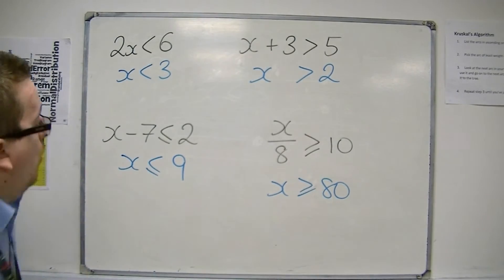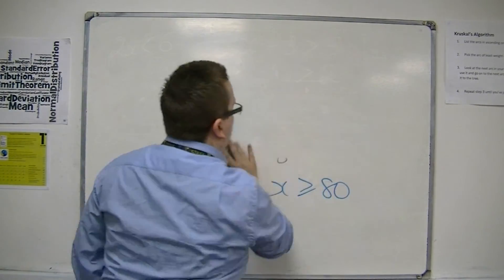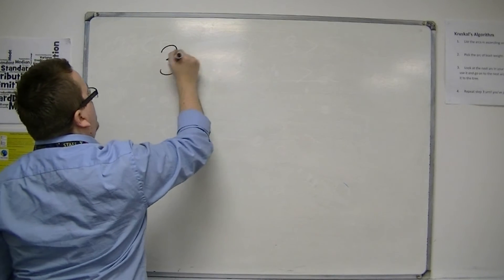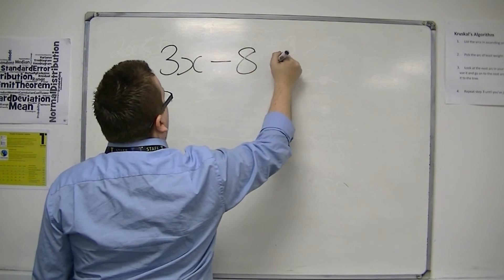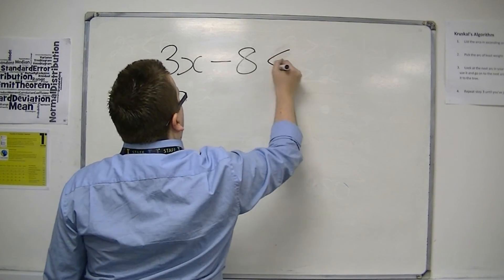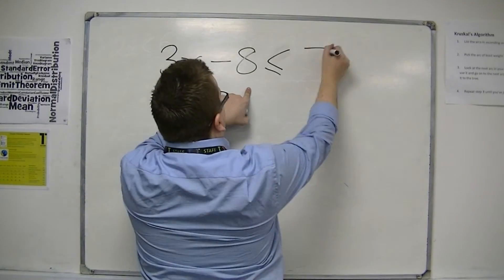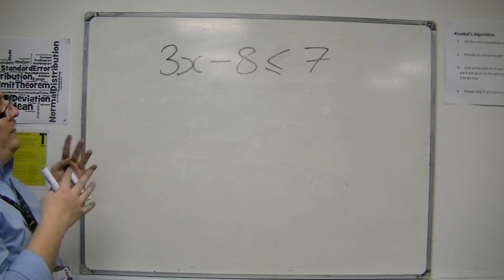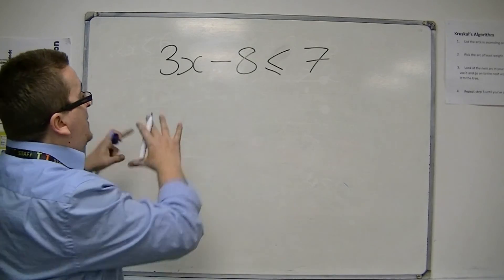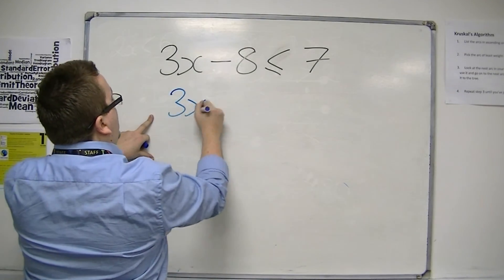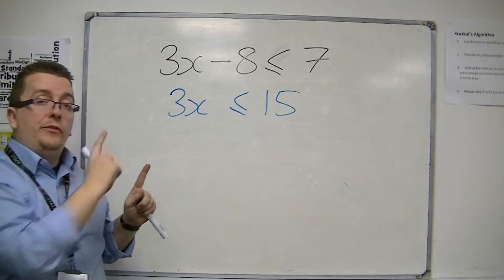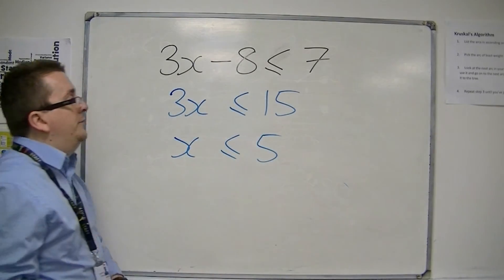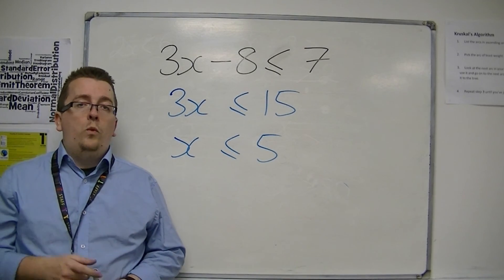Let's look at one more example — a two-step inequality. So 3x minus 8 is less than or equal to 7. If I treat it like an equation, adding 8 to both sides I get 3x is less than or equal to 15. Then dividing both sides by 3, x is less than or equal to 5. And that's how we deal with solving an inequality.